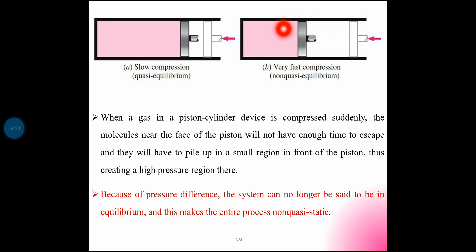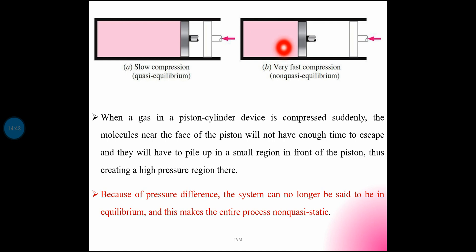Near the piston, molecules accumulate, creating a high pressure region while another location has low pressure. This means the mechanical equilibrium criterion is violated, and therefore thermodynamic equilibrium is not satisfied. In a quasi-static process, every intermediate state must satisfy the equilibrium condition.